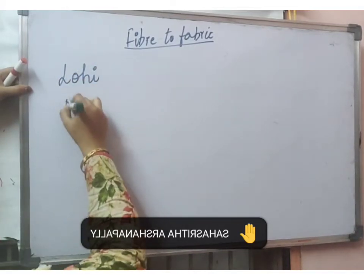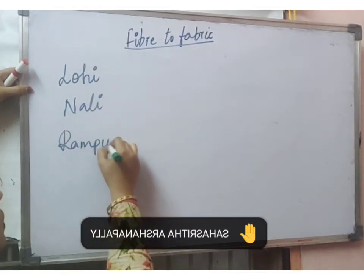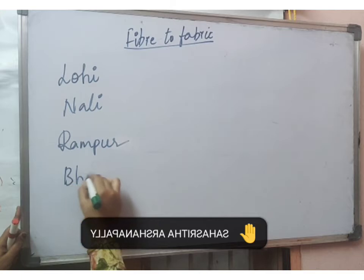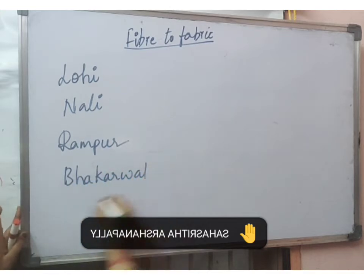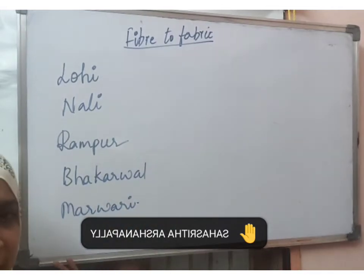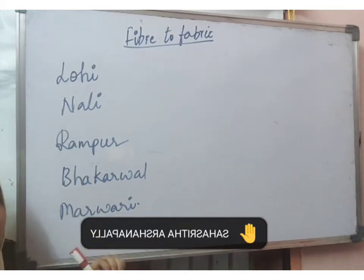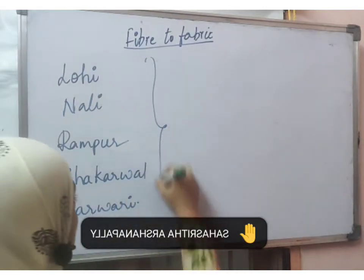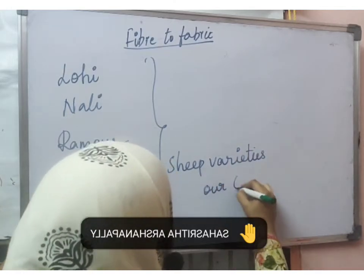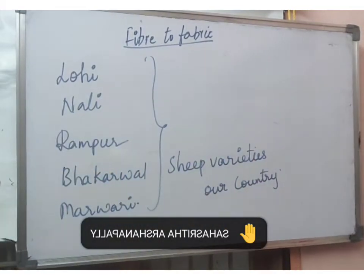Before that, we will see different varieties of sheep that produce wool. The varieties include Lohi, Nali, Rampur, Bakarwal, and Marwari. These are the names of sheep from different places, and there will be differences in the wool obtained from them. These are the varieties of sheep from which wool is obtained in our country; there are different breeds of sheep from which wool is obtained.